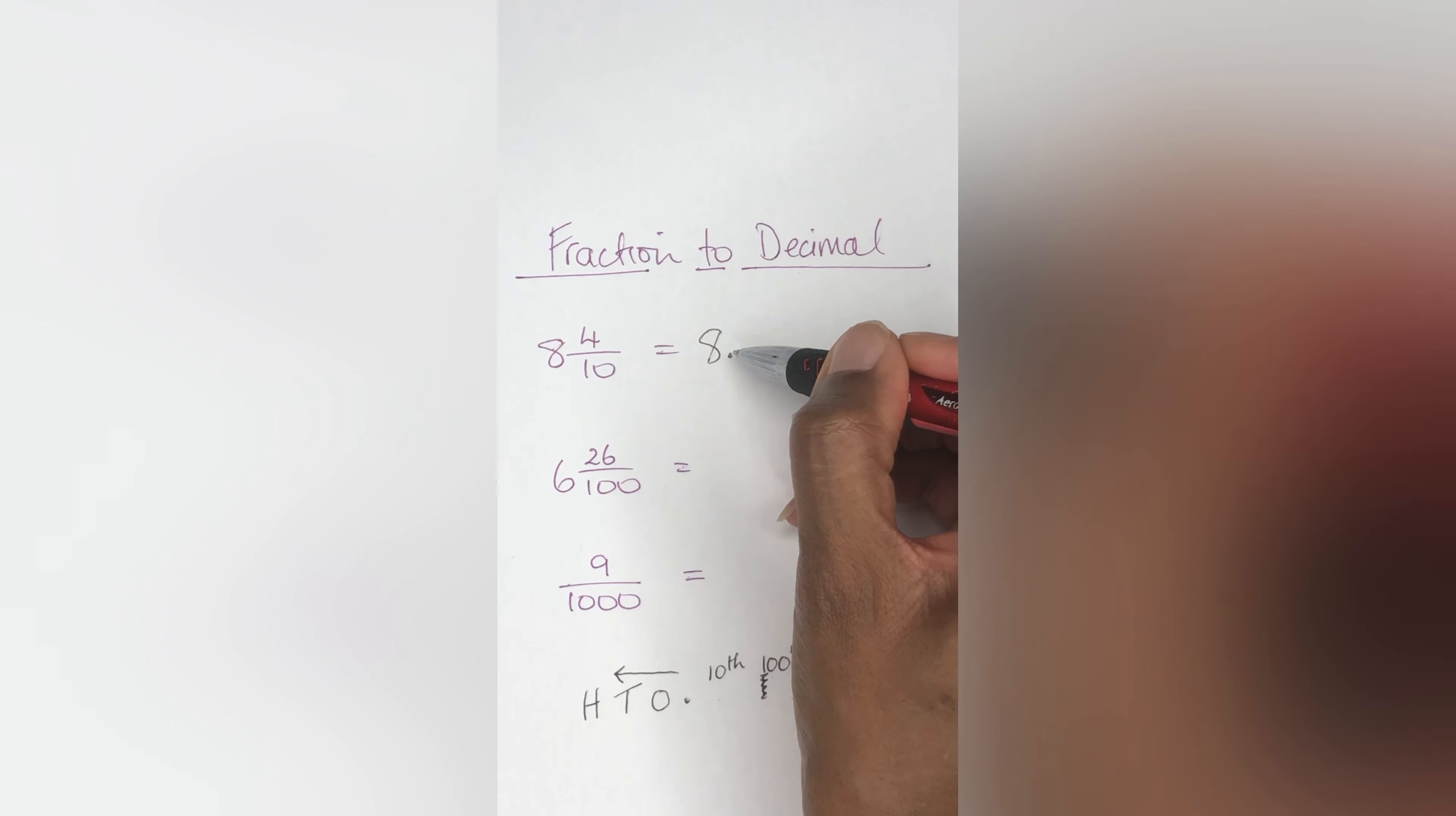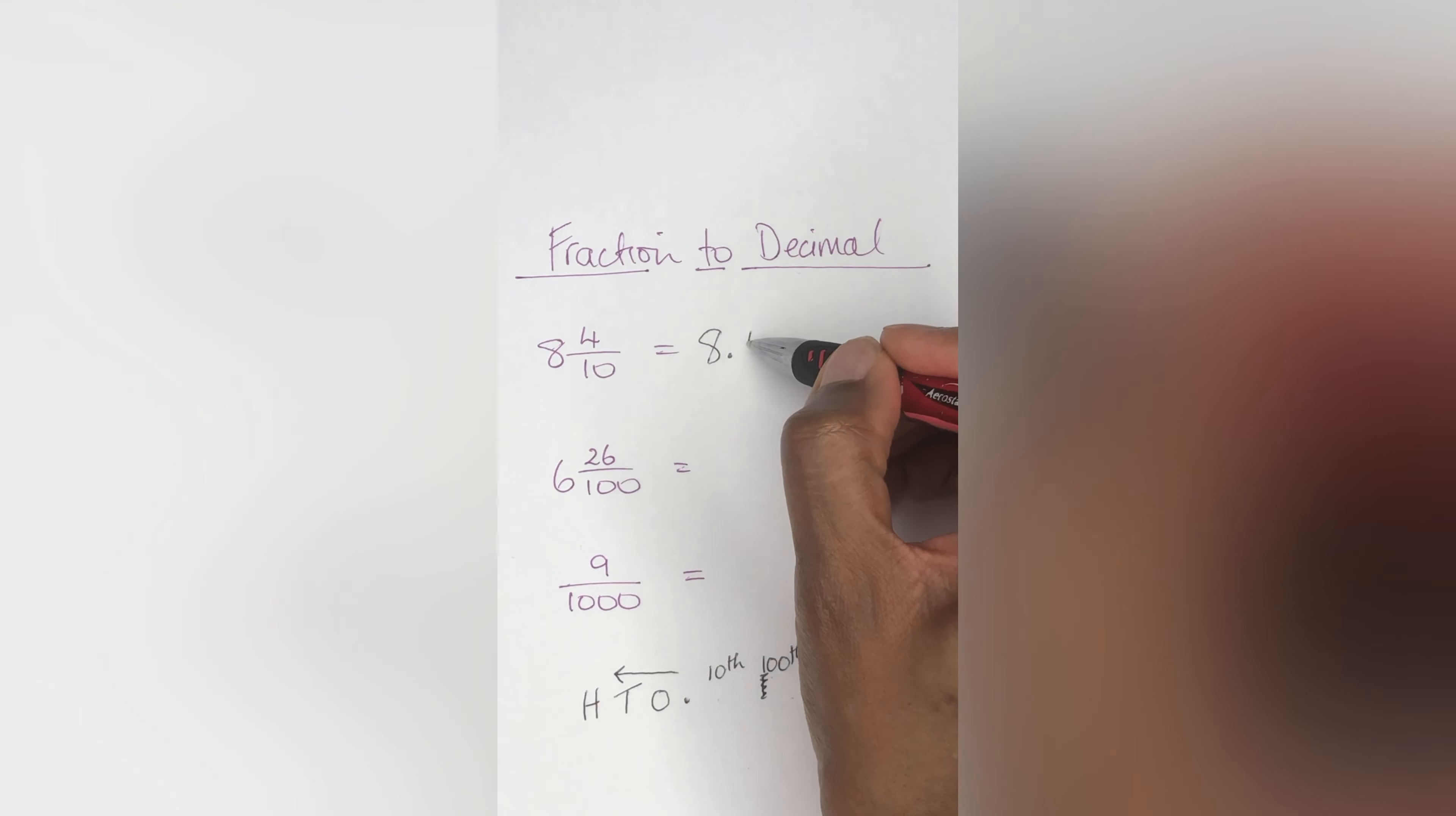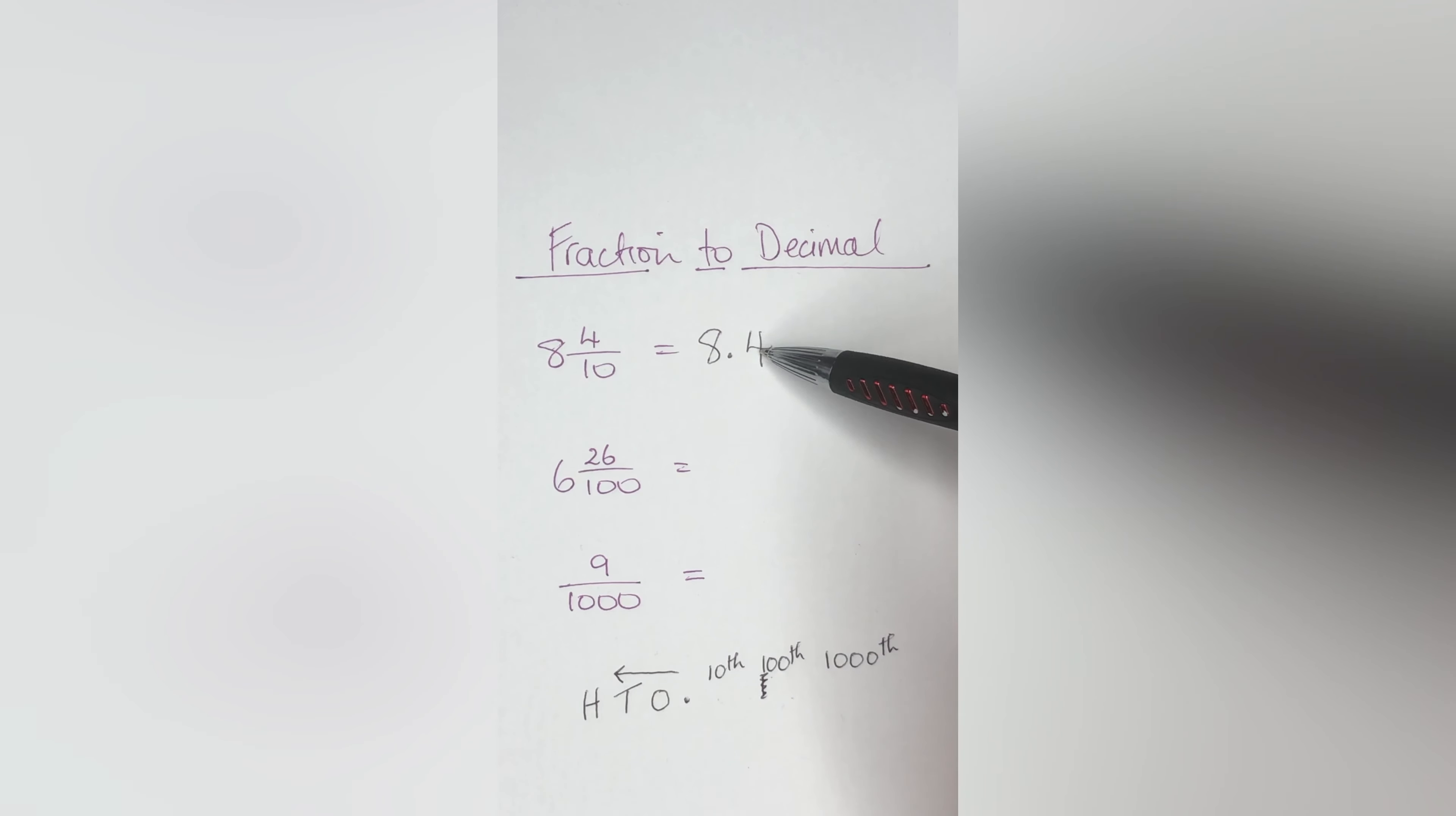When it comes to four tenths, you say eight and four tenths. If you imagine the decimal to be your 'and', this is how you're going to remember it. Eight and four tenths becomes 8.4, because the tenth place is the first place value after the decimal.